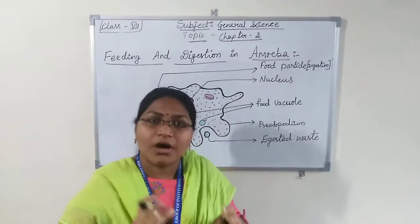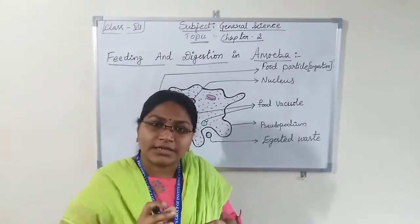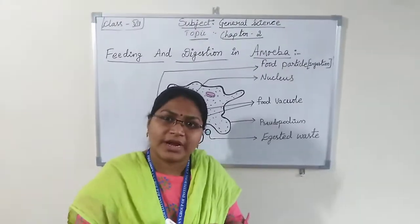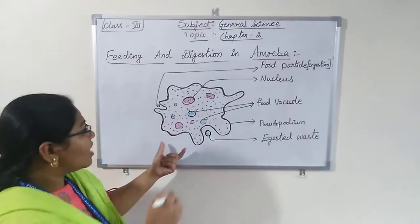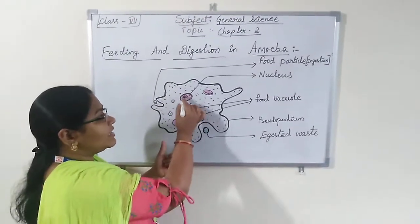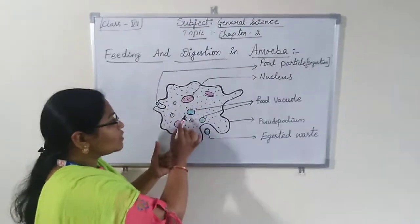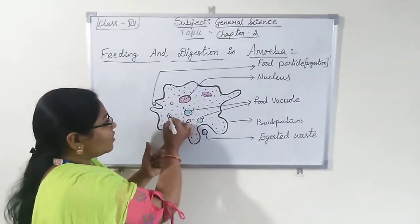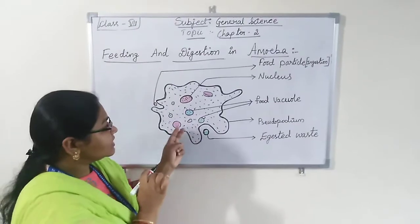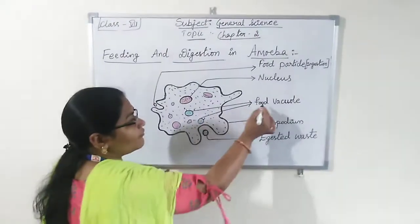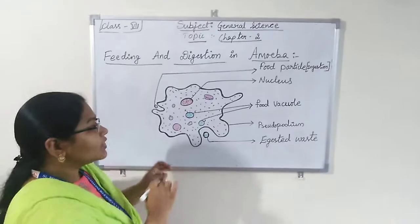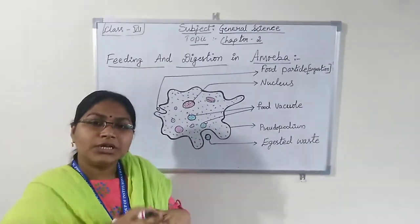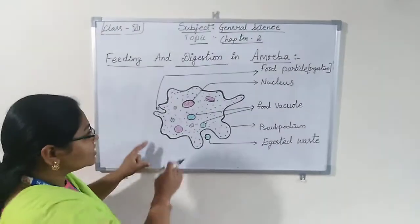Amoeba is a single-celled microorganism which you can find in pond water and observe under the microscope. Amoeba has a cell membrane and a round, dense nucleus, and also small bubble-like structures which are present inside the cytoplasm — we call these food vacuoles.